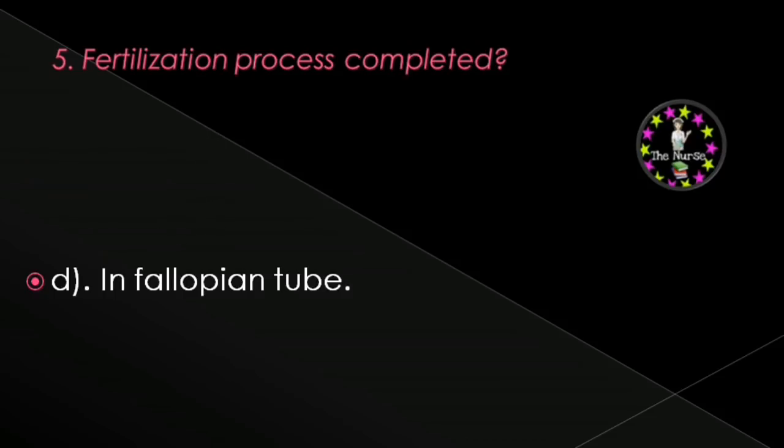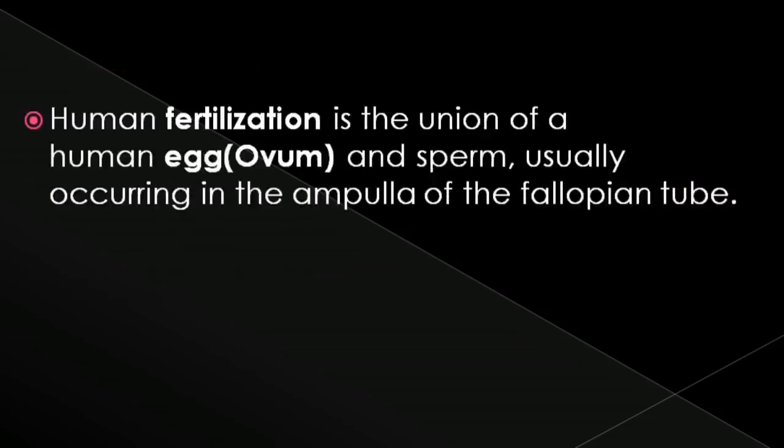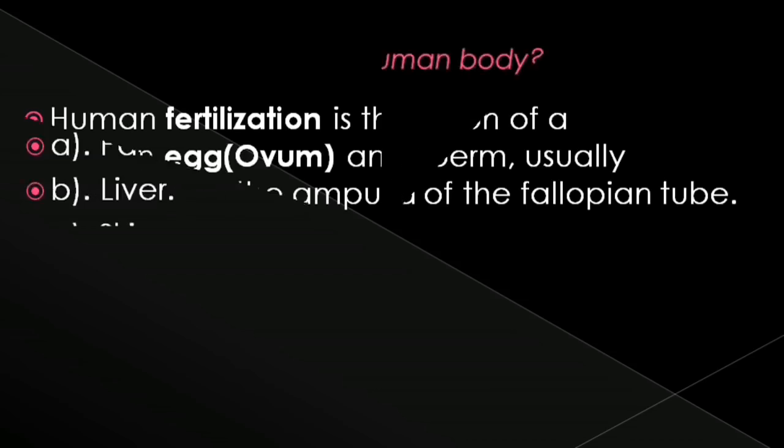Next question: Fertilization process is completed in — ovary, uterus, cervix, or fallopian tube? Correct answer is in the fallopian tube. Human fertilization is the union of a human egg (ovum) and sperm, usually occurring in the ampulla of the fallopian tube.